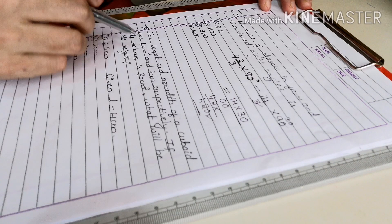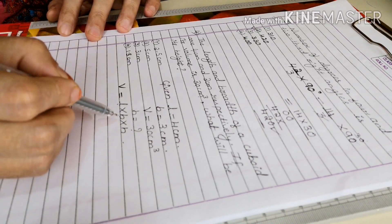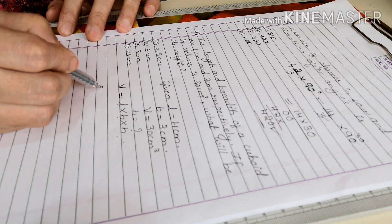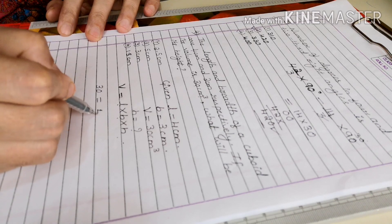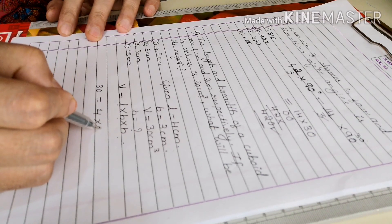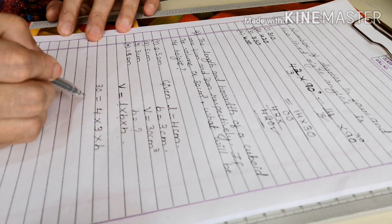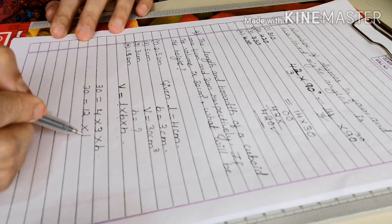Next we have to write the formula of cuboid. Volume of cuboid is L into B into H, that is length into breadth into height. Volume is given, volume is equal to 30. Length is 4 cm, breadth is 3 cm, and height we don't know. We have to find height. So 4 3s are 12. 30 into H.